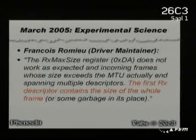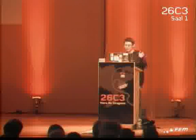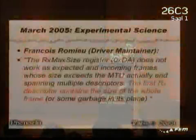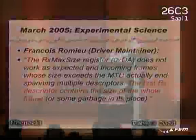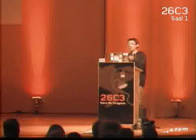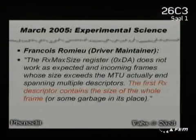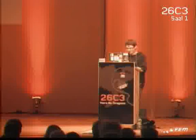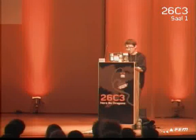So this is what the driver maintainer says, and I love this quote so I put it on the slide in full. He says the RX MUX size register does not work as expected, and incoming frames whose size exceeds the MTU actually span multiple descriptors. So this is the same that we saw with E1000: if you have a frame longer than a buffer, it will span multiple buffers. But what's different about this card is that the length field reported will be the length of the entire frame, not just the one in the buffer. So you write past the end of the buffer, you get memory corruption, and it's all bad. Or there's some garbage in the size field, but we'll come to that later.